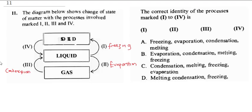When you have ice becoming water, it's called melting. So with this we have I to be freezing, II to be evaporation, III to be condensation, and IV to be melting. So the correct answer is A.